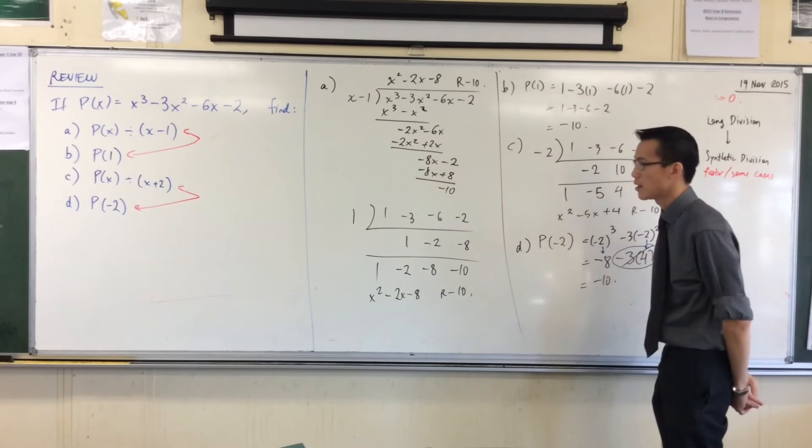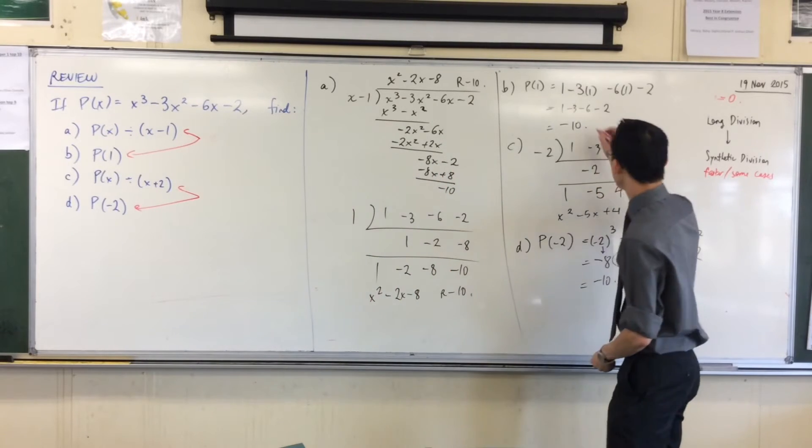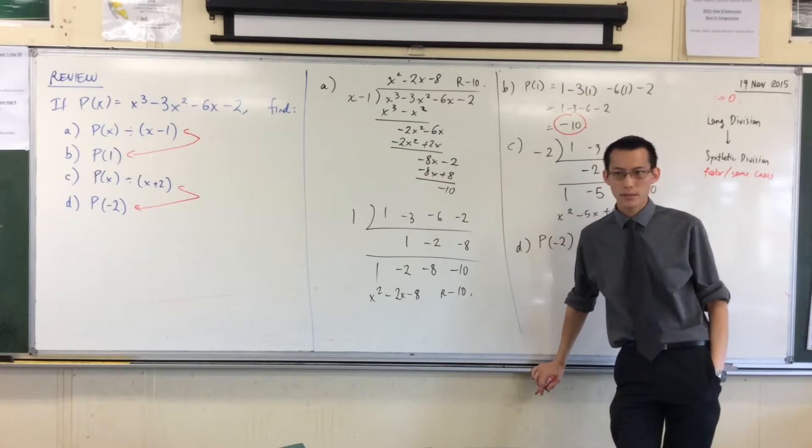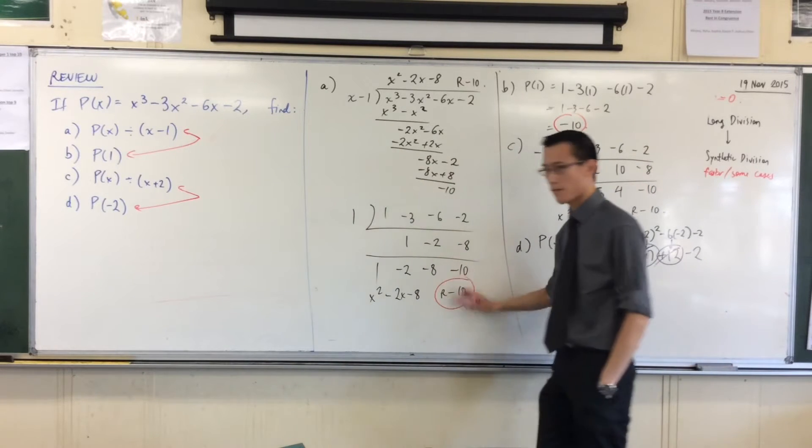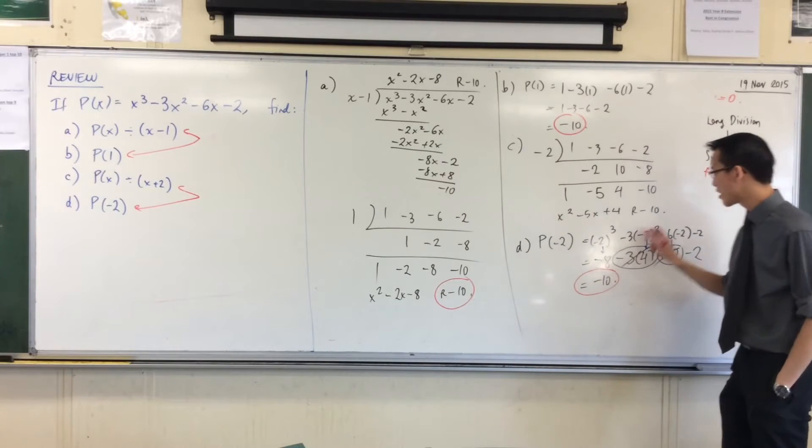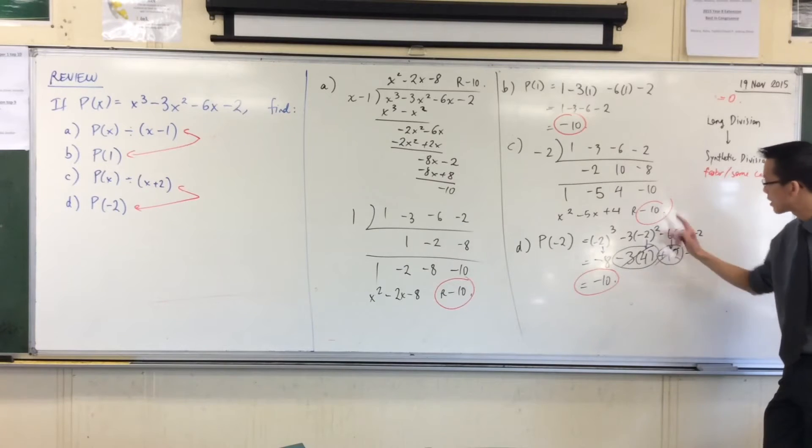Now what you should see is there's numbers that you get which are in common. This negative 10, where does it appear in part A? It's the remainder over here. Coincidentally I also got negative 10 here which again appeared here. Do you see that?